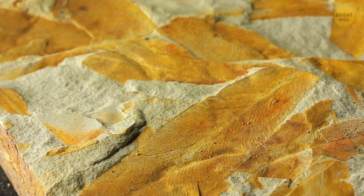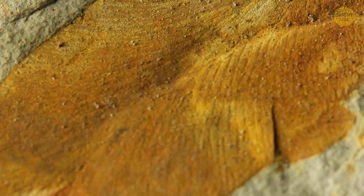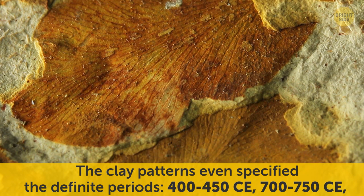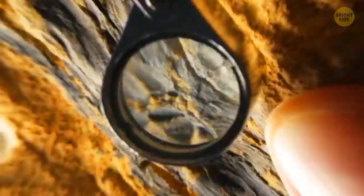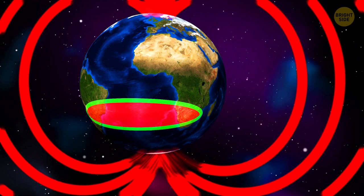And guess what? They found out that the process of the weakening of the magnetosphere started long ago. The clay patterns even specified the definite periods: 400-450 CE, 700-750 CE, and 1225-1550 CE. Uh-oh, it's getting closer and closer to our time. To make a long story shorter, it appears as if something hidden deep under Africa is affecting the magnetic field of the whole planet. And scientists may have finally figured out what it could be.